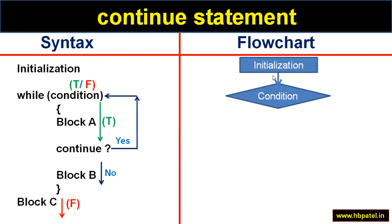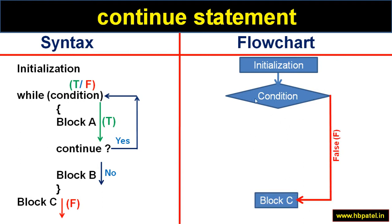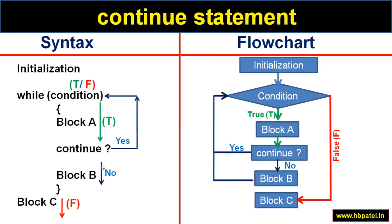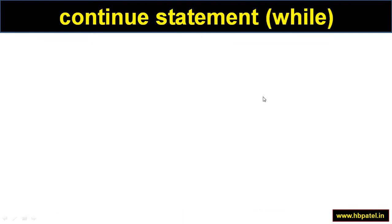Looking at the flowchart: first we have the initialization, then the condition. If the condition is false, we're done. If true, we execute block A, then check whether continue is executed or not. If yes, block B is skipped and we go back to the condition. If no, block B is executed and then we go back to the condition.